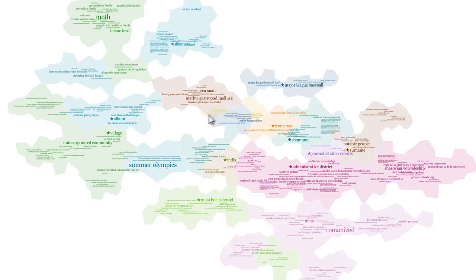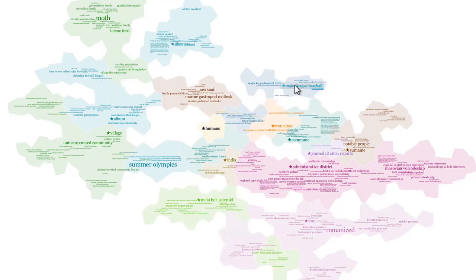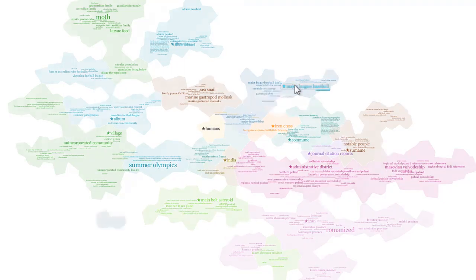In this video, we will show the use of the tool for an exemplar dataset of U.S. English Wikipedia to visualize over 4 million text files.